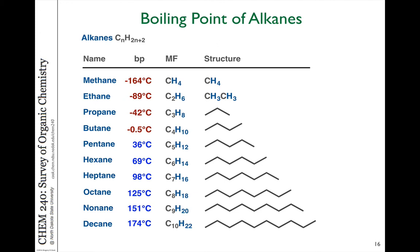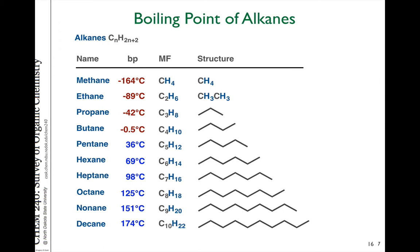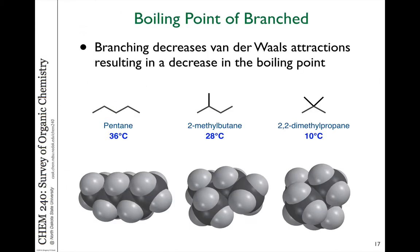There are attractive forces between these non-polar hydrocarbons that we call van der Waals attractions. The longer the molecule, the more attractive forces there are between molecules. Also, the more linear they are, the more those attractive forces are available. If you take a look at the isomers for pentane — pentane, 2-methylbutane, and 2,2-dimethylpropane — this represents increasing branching of the molecule.